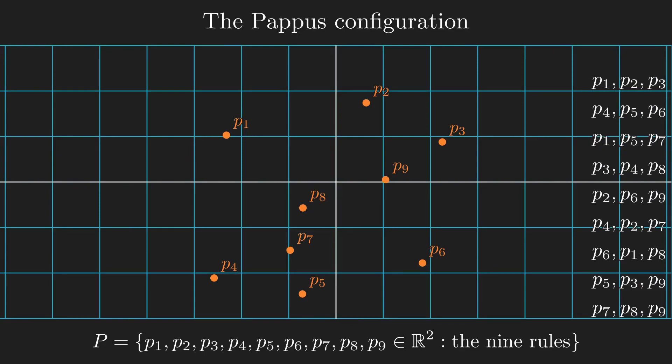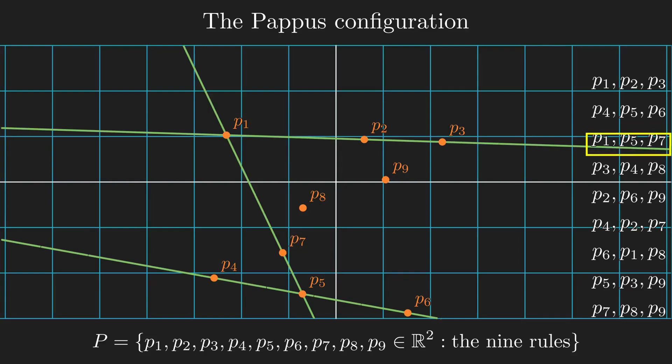Given these nine arbitrarily placed points, I apply the first rule. This rule restricts points one, two, and three to be collinear. There are many ways for these points to be collinear, so I'll just choose to move point two to be aligned with points one and three. The line marks that these points are collinear. The next rule is for points four, five, and six. I'll choose to move point six. Next is points one, five, and seven. I'll move point seven. Next is points three, four, and eight. I'll move point four.